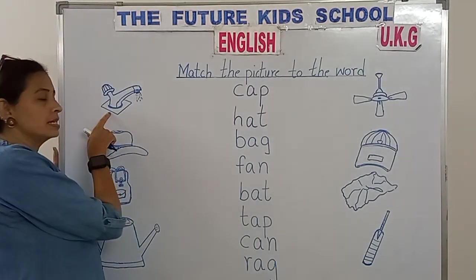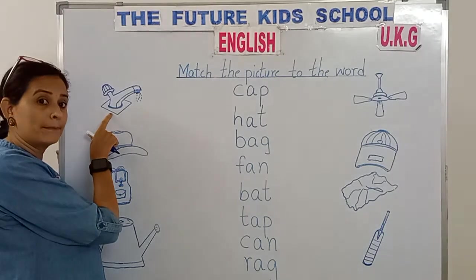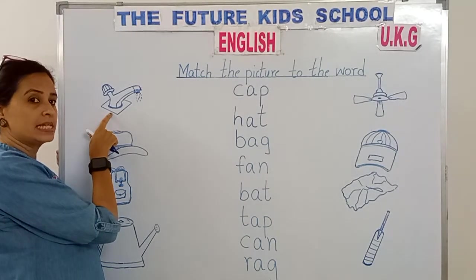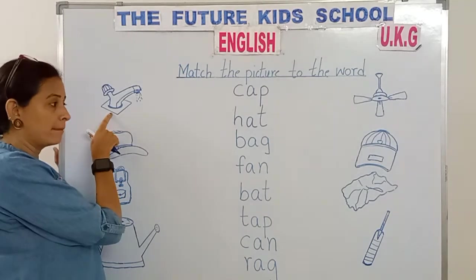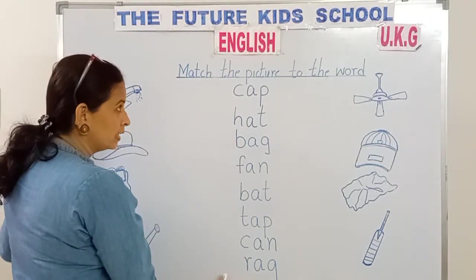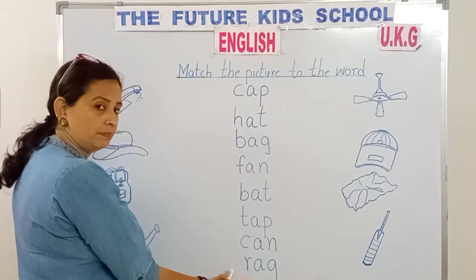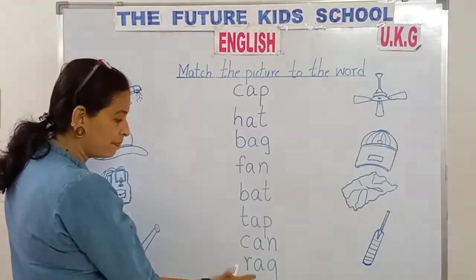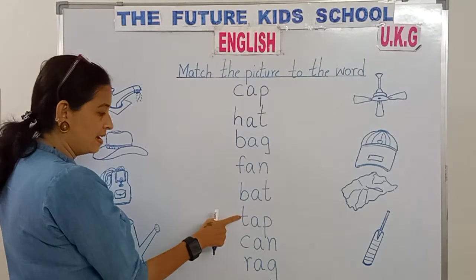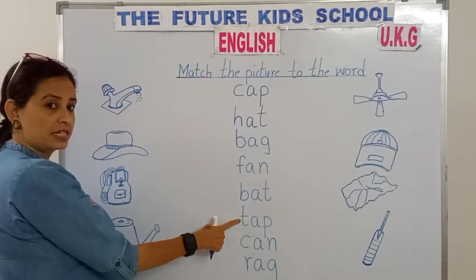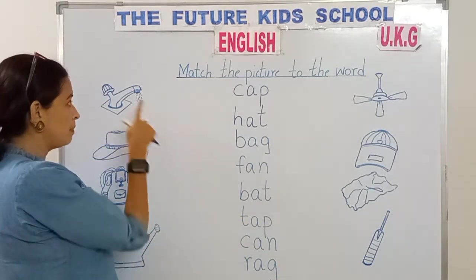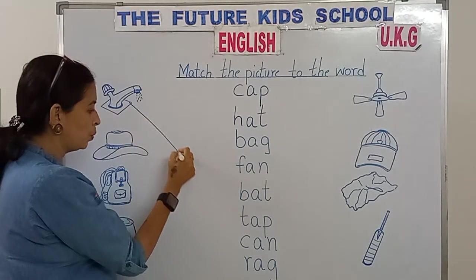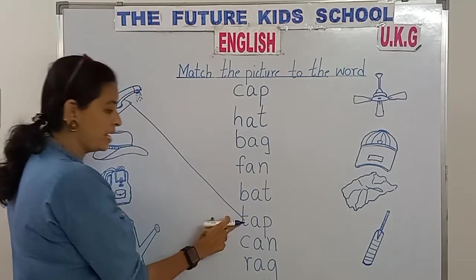This is a picture of a tap. T-A-P spells tap. Can you show me the word tap children over here? Look in these words. T-A-P, tap. Yes, here is the word T-A-P tap. So match the picture tap to the word T-A-P tap.